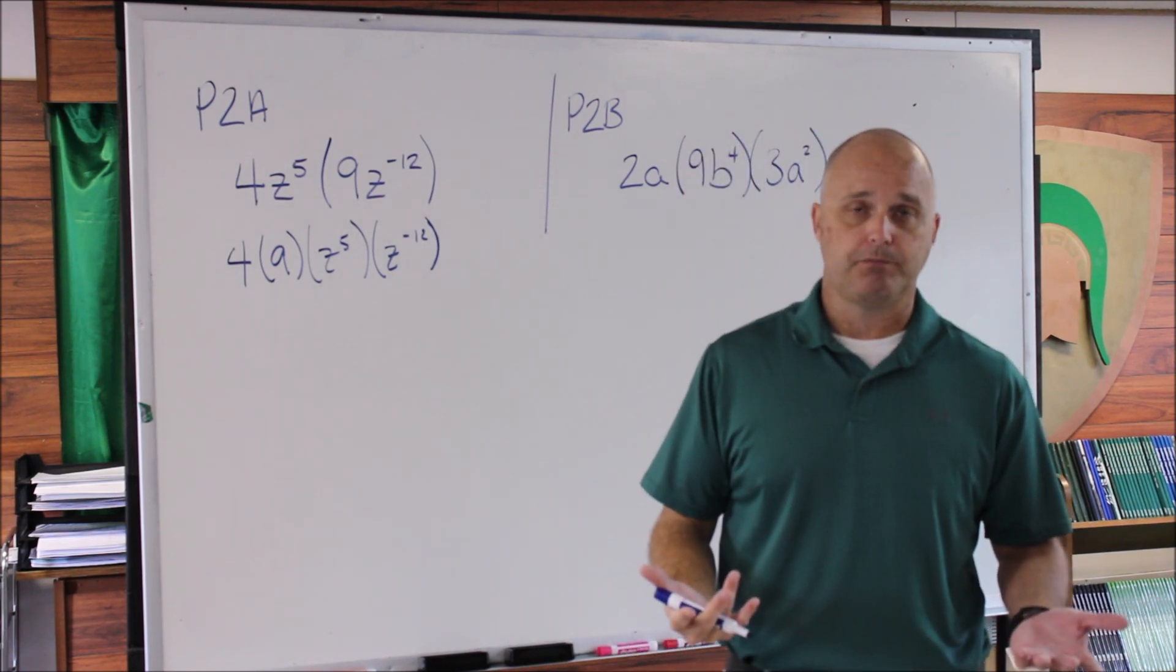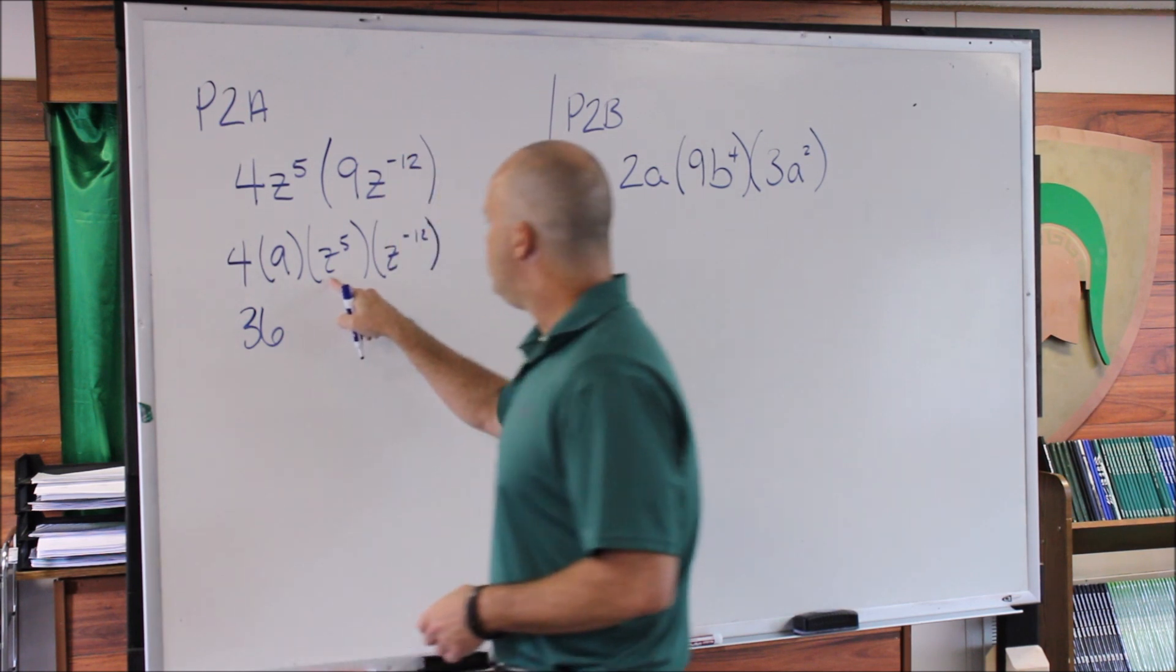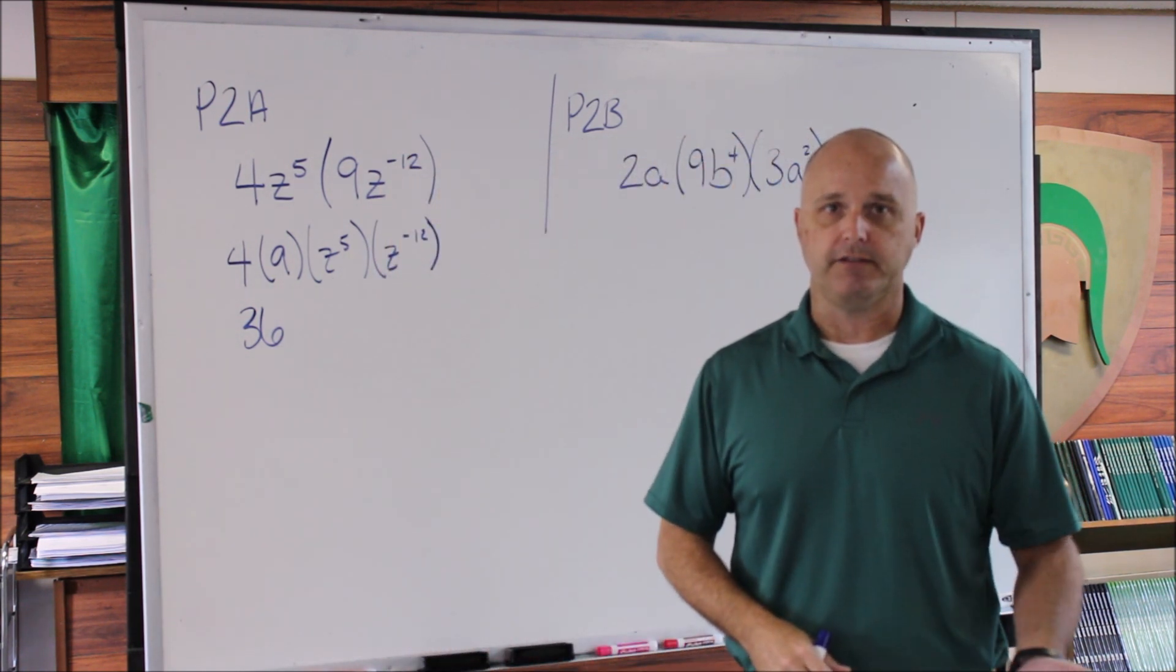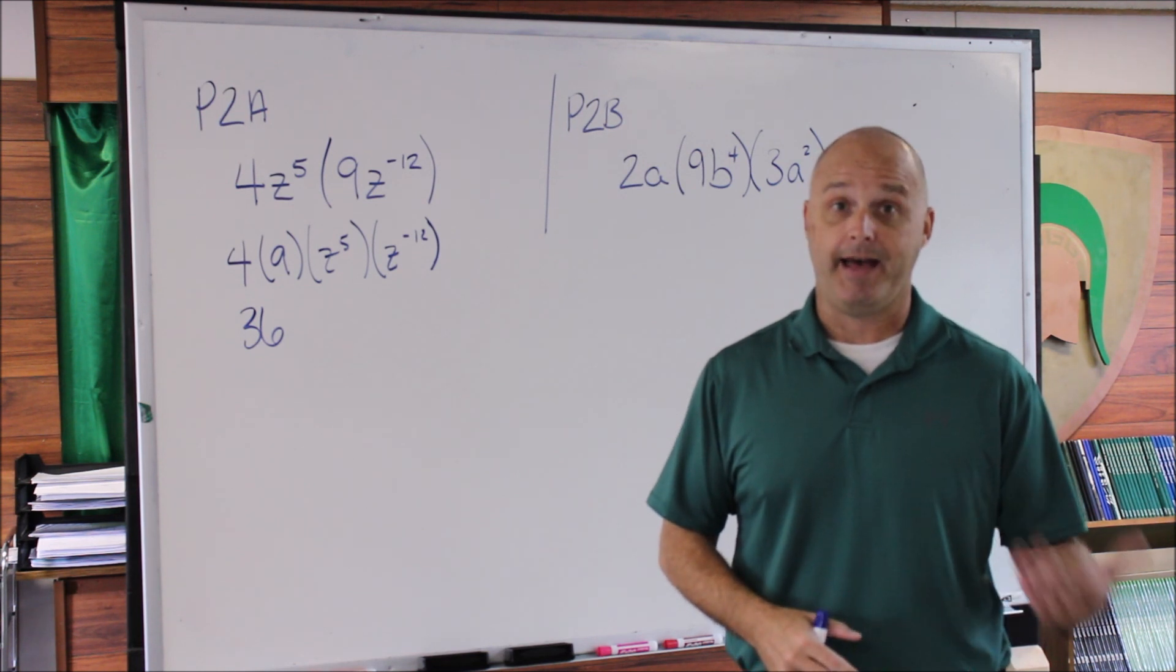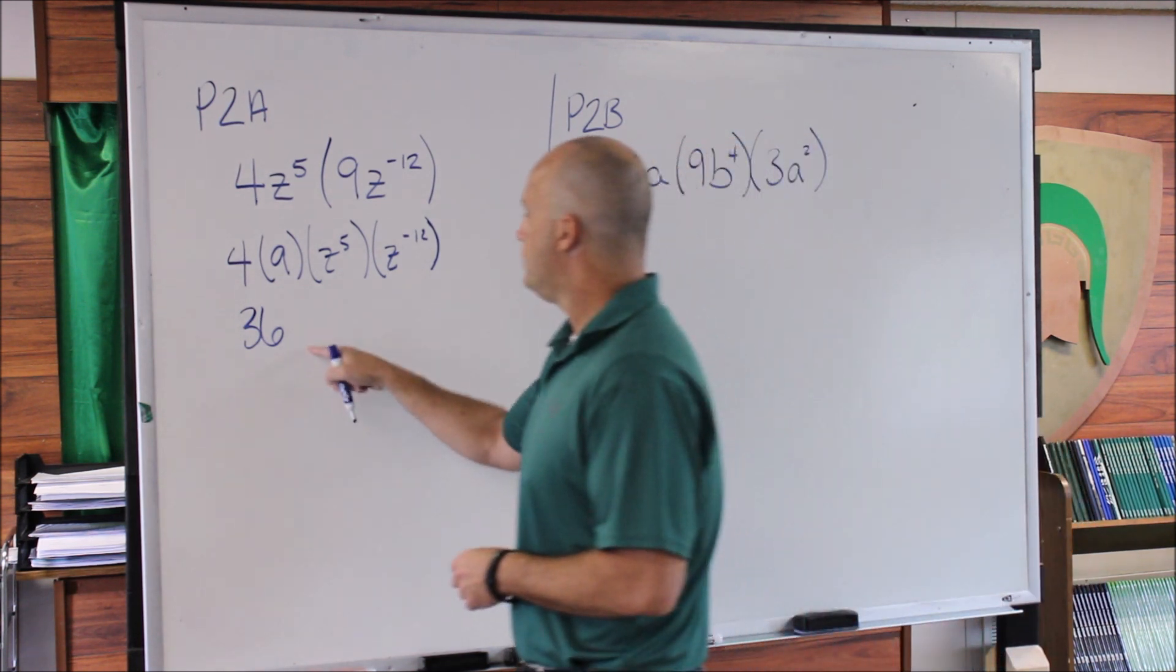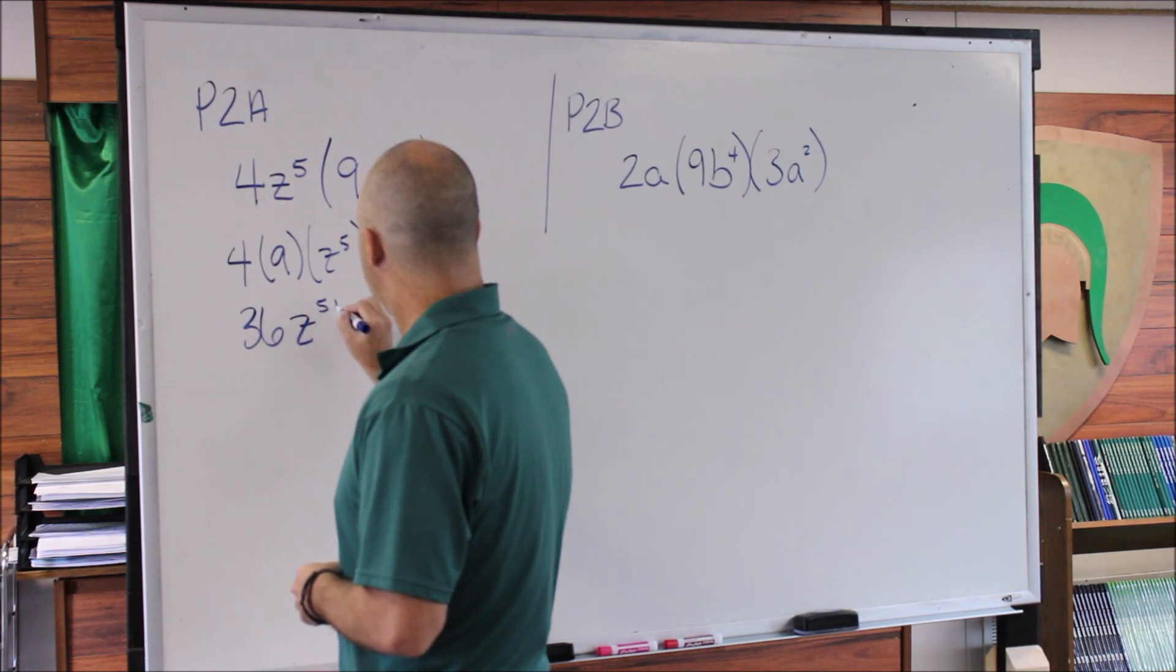So 4 and 9, real simple. Just multiply those together, so you get 36. With z^5 and z^(-12), I've got the same base. And since I'm multiplying like bases, that means I'm going to add the exponents. So this becomes 36z^(5+(-12)).